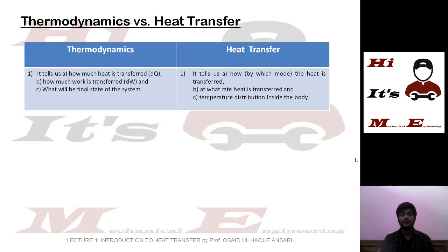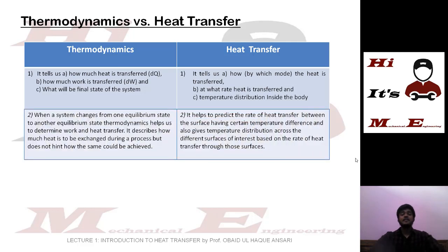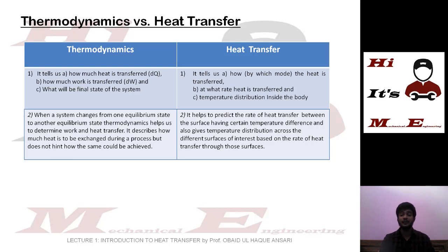Although we know the temperature at the initial and final states, for intermediate states we must know heat transfer principles to find the temperatures. When a system changes from one equilibrium state to another, thermodynamics helps determine work and heat transfer — it describes how much heat is to be exchanged during a process, but does not hint at how the same could be achieved. Heat transfer helps predict the rate of heat transfer between surfaces having a certain temperature difference and also gives us temperature distribution across different surfaces of interest.